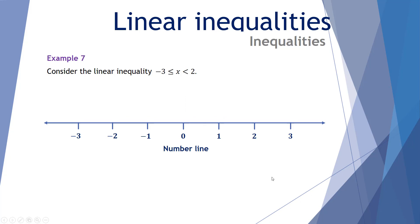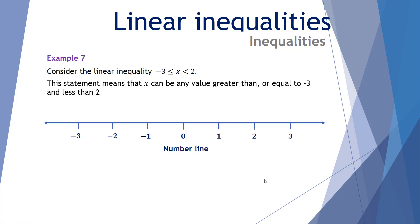Example 7: consider the linear inequality -3 ≤ x < 2. This statement means x can be any value greater than or equal to negative 3 and less than 2. Our bookends are negative 3 and 2. There's no equal sign on the right, so the 2 is hollow — not filled. There is an equal sign on the left, so negative 3 is included and filled. Our numbers can include anything equal to or greater than negative 3 and less than 2.